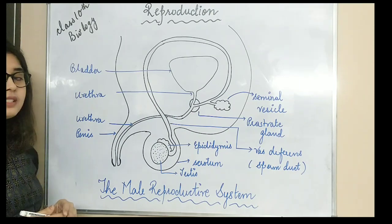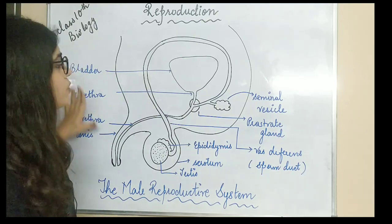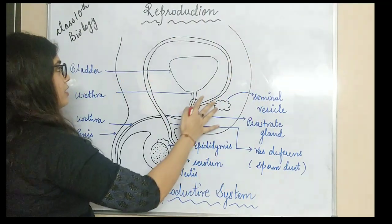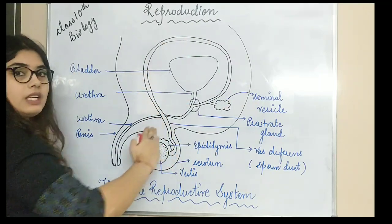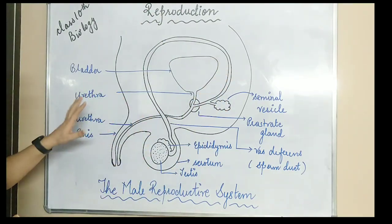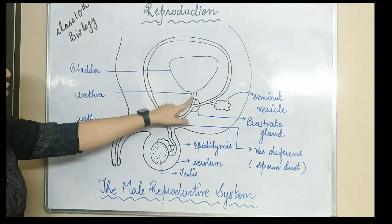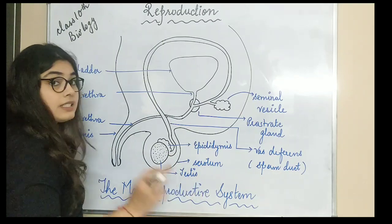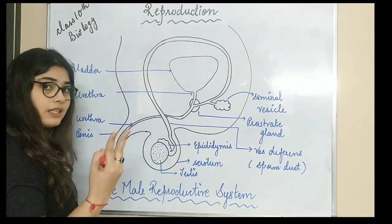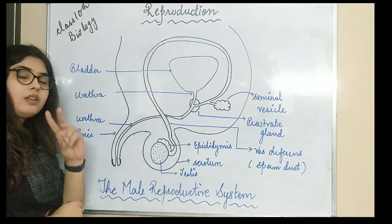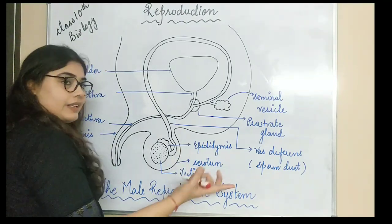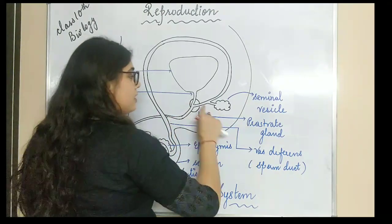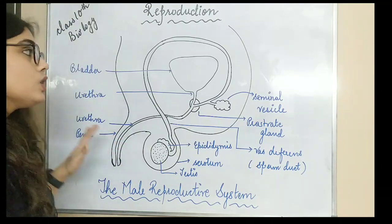First of all, if we are studying about the male reproductive system, we need to understand all the parts. This is the outer part and this is the inner portion — what is happening inside is shown here. So this is the bladder, this tube-like structure is the urethra, then this is the penis, and this is the testes — there are actually two present, so the plural is testes. Then there is the scrotum, a sac-like structure, then the epididymis, then this portion is referred to as the vas deferens, this gland is the prostate gland, and this gland is the seminal vesicle.